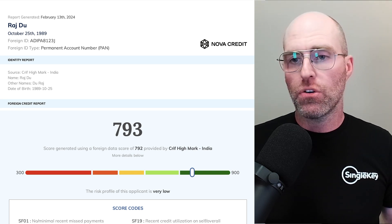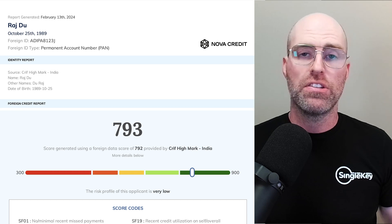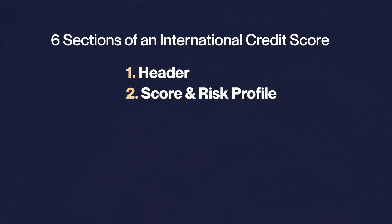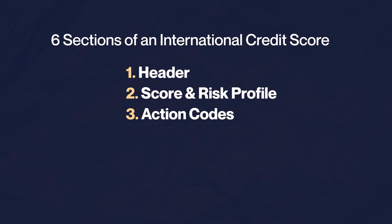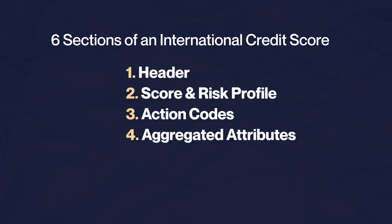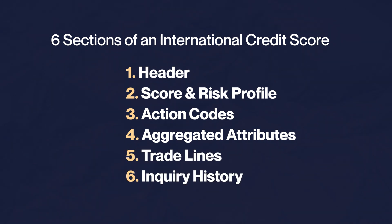The international credit score report is broken down into six sections: the header, score and risk profile, action codes, aggregated attributes, trade lines, and inquiry history.